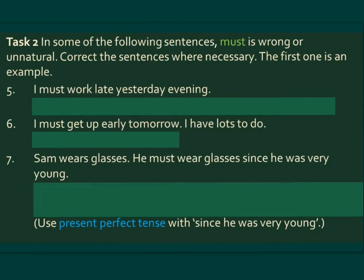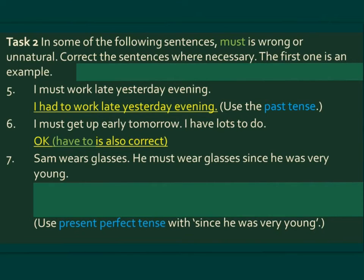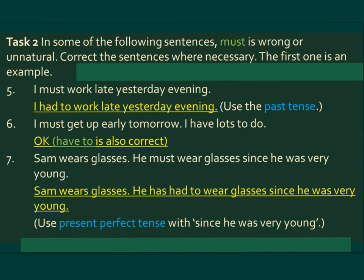Number five: I must work late yesterday evening — this is incorrect. The correct version is: I had to work late yesterday evening — here we use the past tense. Number six: I must get up early tomorrow, I have lots to do — this is correct. Note that using have to is also correct. Number seven: Sam wears glasses, he must wear glasses since he was very young — this is incorrect. The correct version is: Sam wears glasses, he has had to wear glasses since he was very young — here we use the present perfect tense with 'since he was very young'.